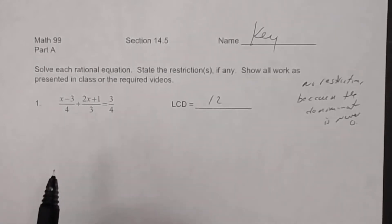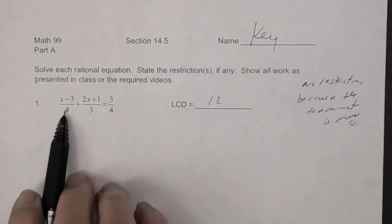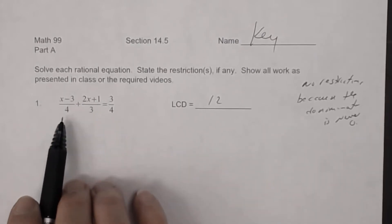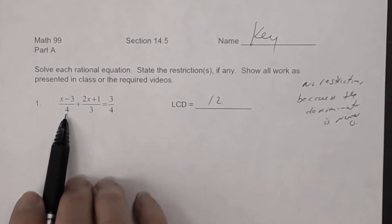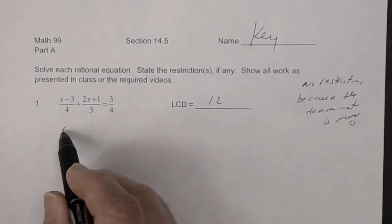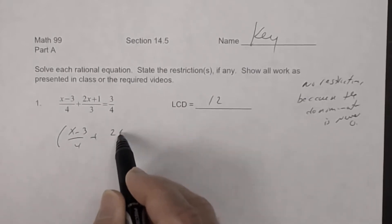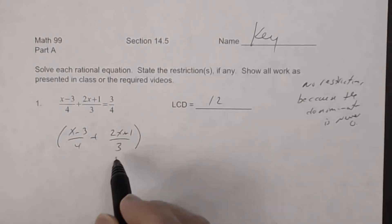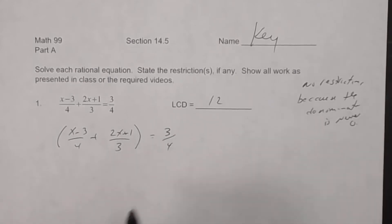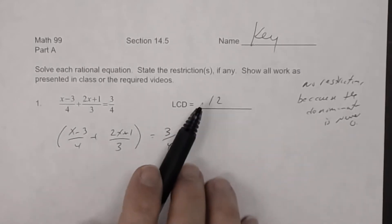The next step is to multiply both sides by the least common denominator. The whole point is to make those denominators equal to one. On the left side there are two fractions — (x minus 3) over 4 and (2x plus 1) over 3 — so put the left side in parentheses. On the right side there's just one fraction, so parentheses aren't needed there.